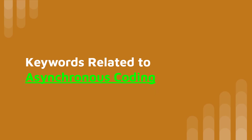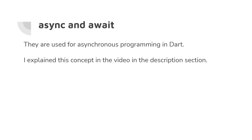Now let's move to keywords related to asynchronous coding. Asynchronous coding is when lines of code are not executed sequentially and you have to wait for one line to complete. For example, if you want to retrieve an image from the internet, it takes time to connect, retrieve, and download the image — you have to specify whether your program should stop and wait or continue executing other lines of code.